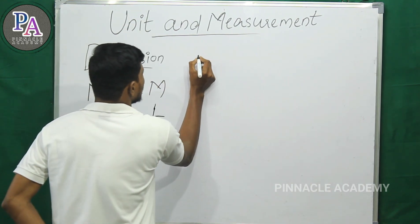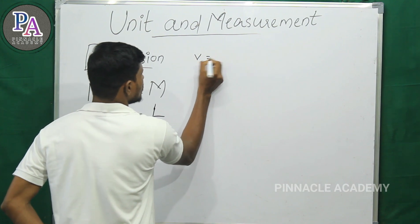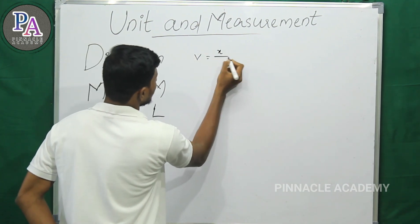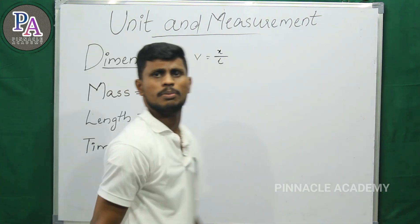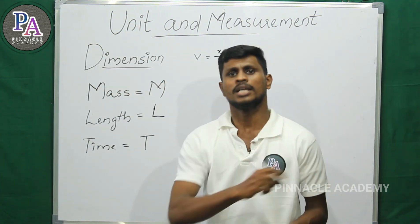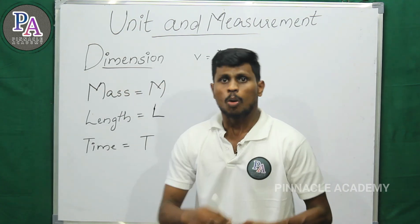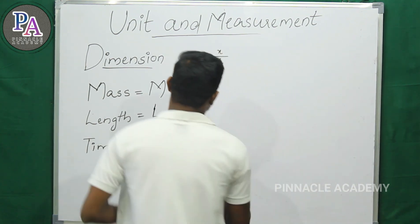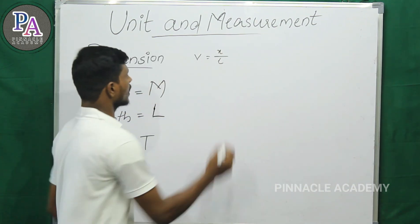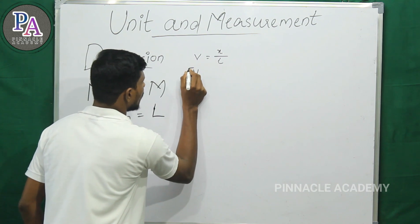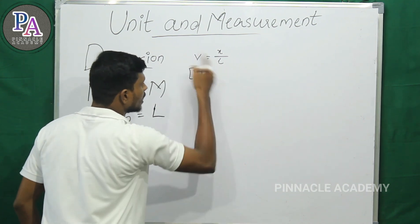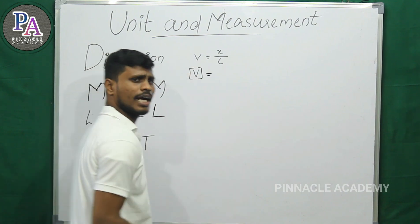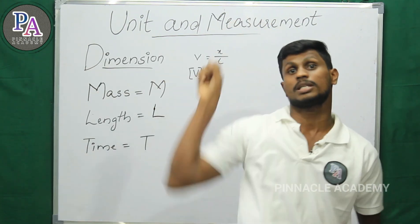So let's go to an example. What is velocity? Velocity is displacement by time. The dimension on the left-hand side of the velocity equation is called the dimension. We call it the dimension.